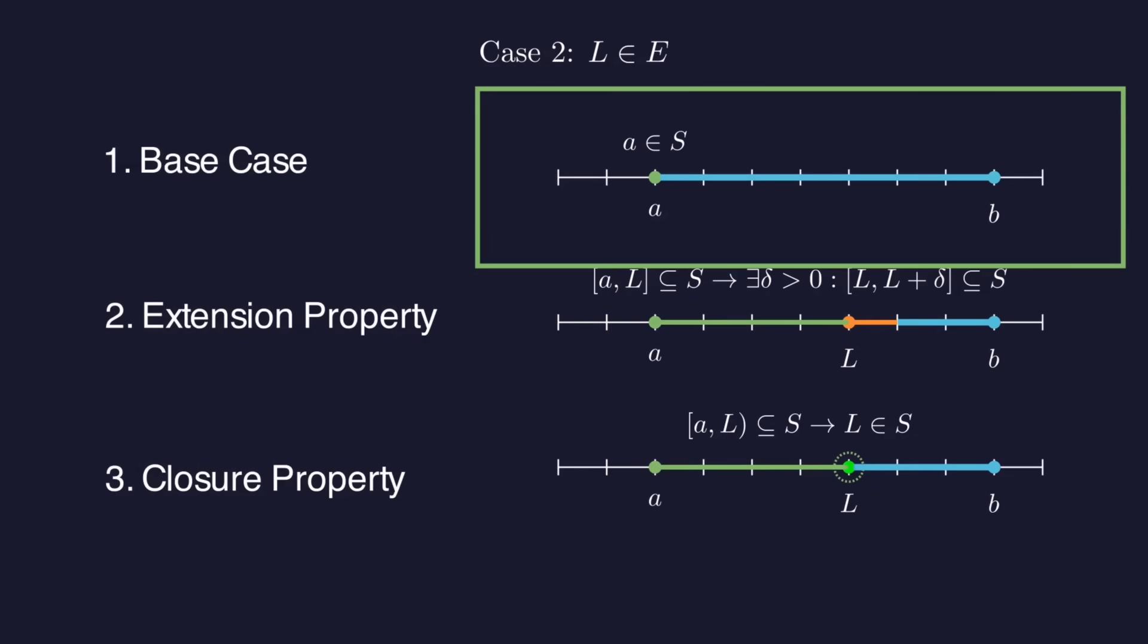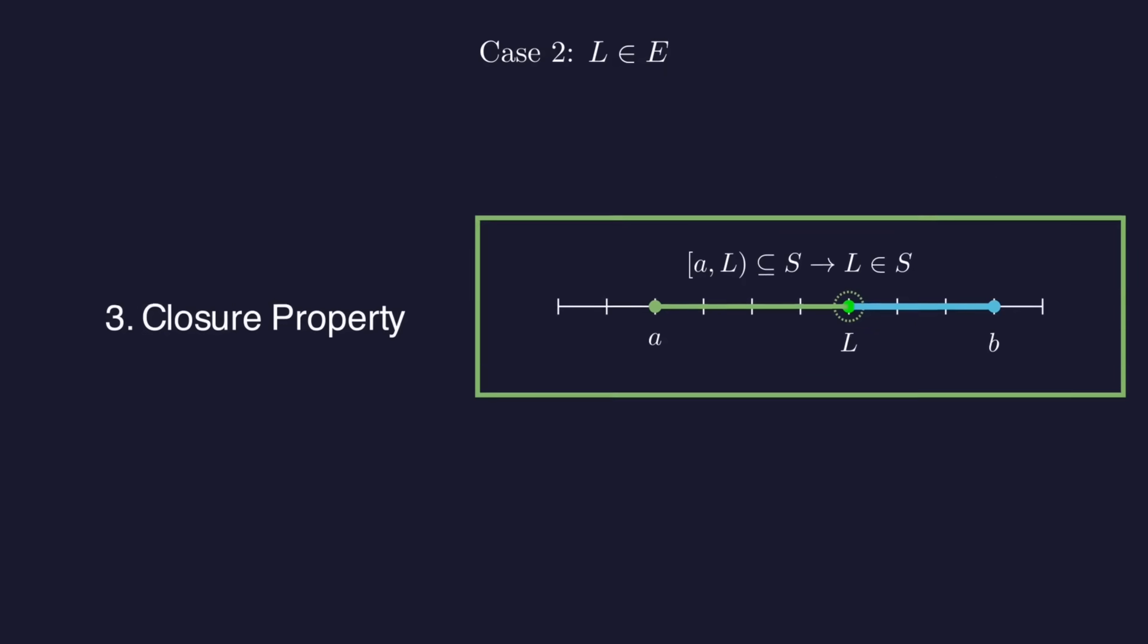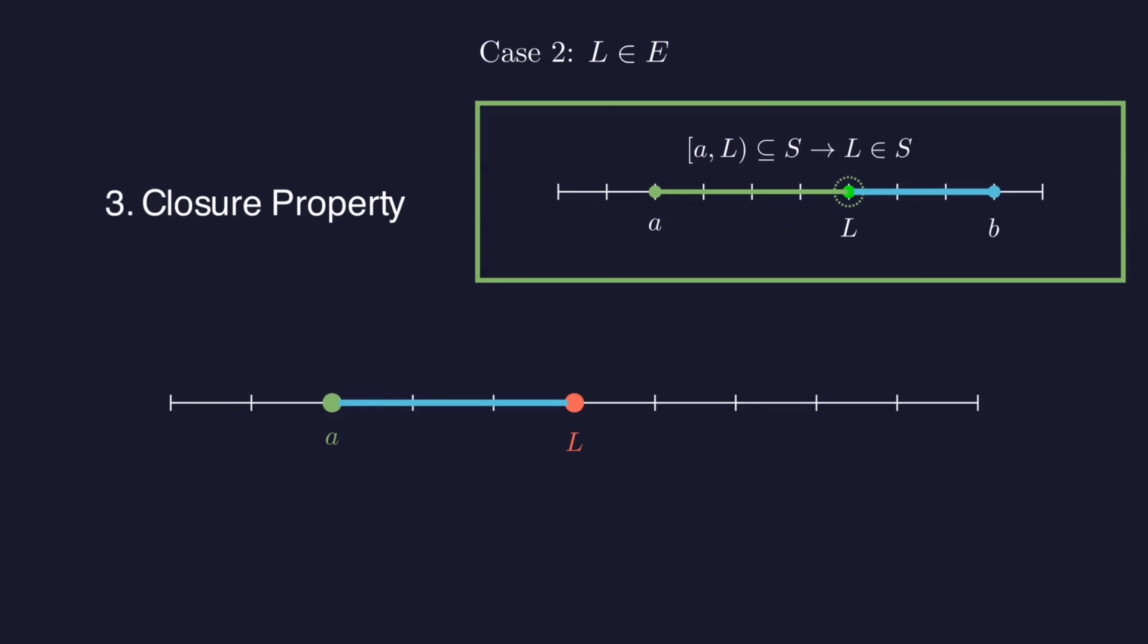But since everything from A up to but not including L is in S, we can use the closure property. This property tells us that S must also include L itself, which again is a contradiction since we are assuming that L is one of the exceptions. So this case is impossible as well, and that's the end of our proof.